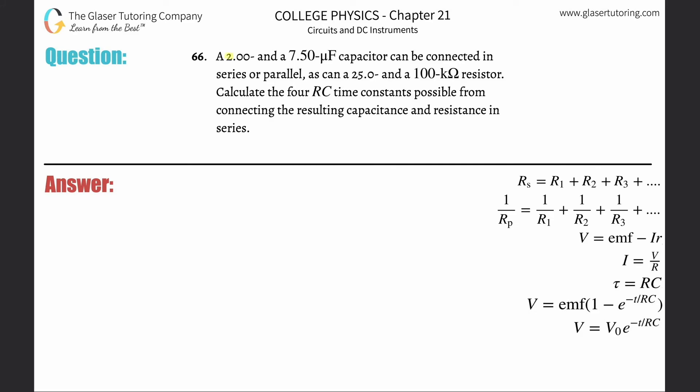Number 66: a 2 and 7.5 microfarad capacitor can be connected in series or parallel, as can a 25 and 100 kiloohm resistor. Calculate the four RC time constants possible from connecting the resulting capacitance and resistance in series and in parallel.